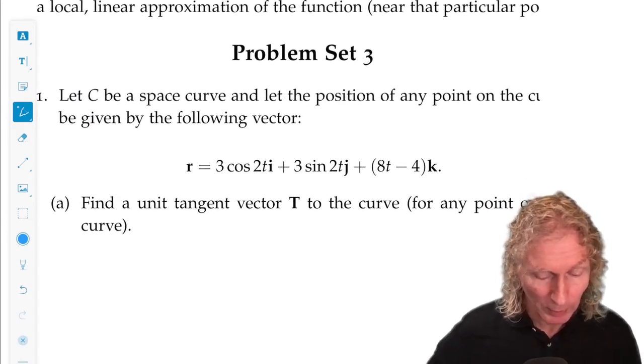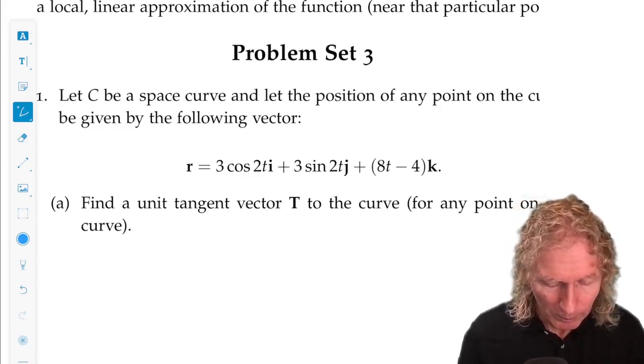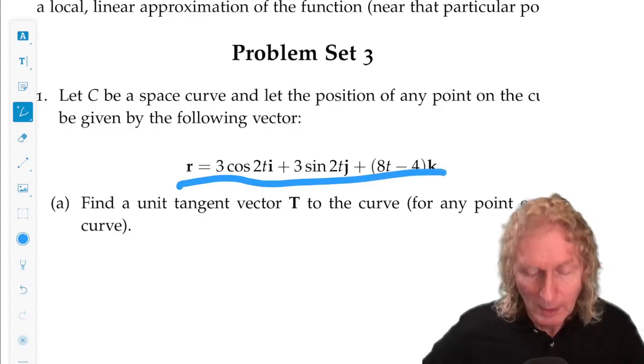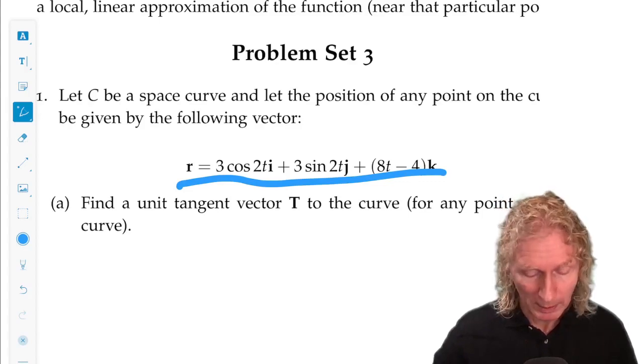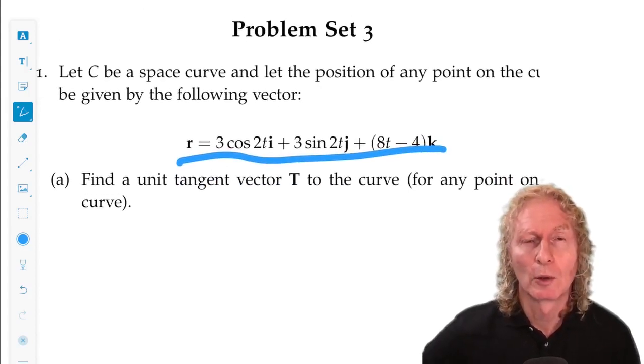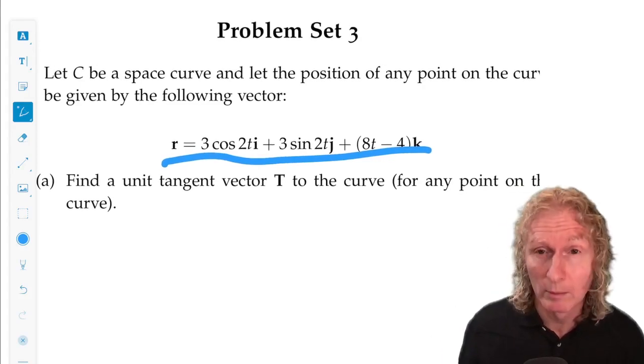So problem 1 is pretty straightforward. I'm giving you a concrete example of a space curve, and I'm going to ask you to compute the elements of the coordinate system at any point on the space curve that we derived in the lecture. So I want you to find the unit tangent vector, uppercase T.